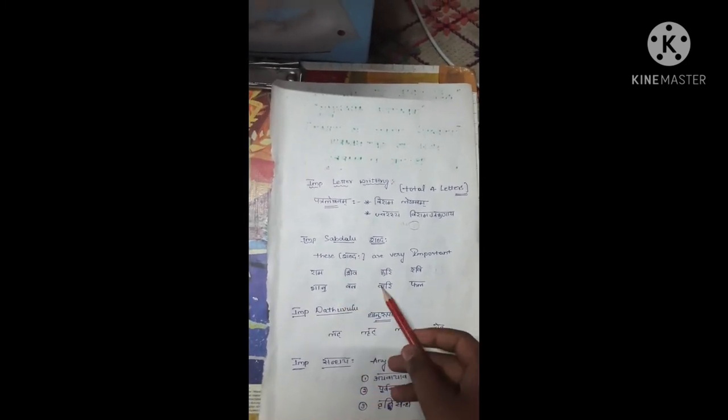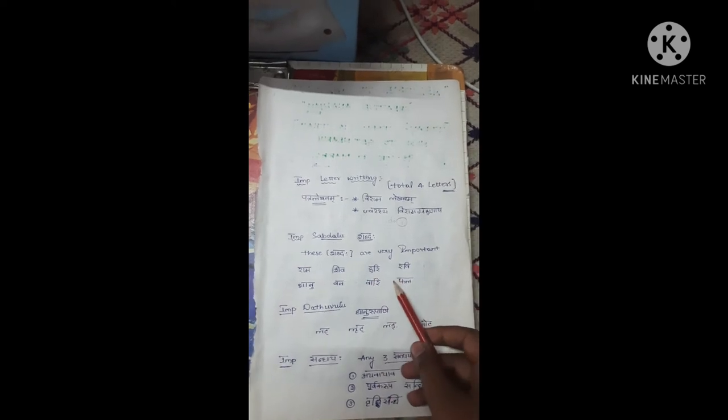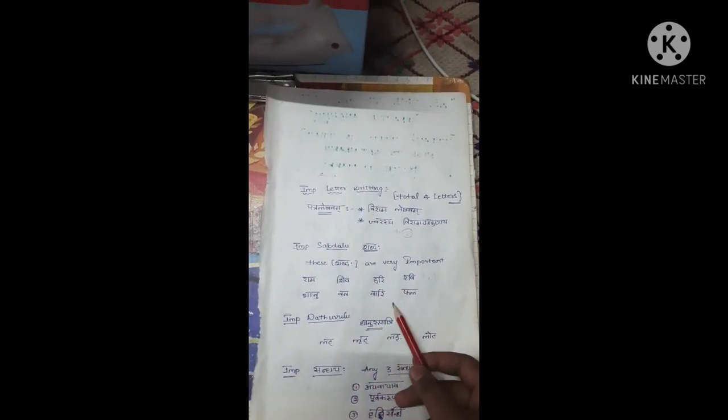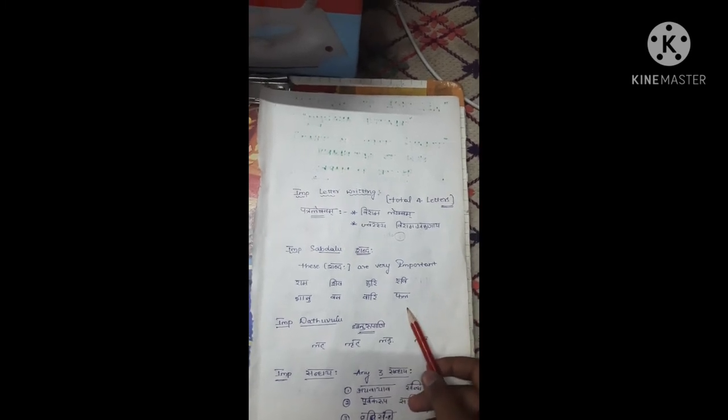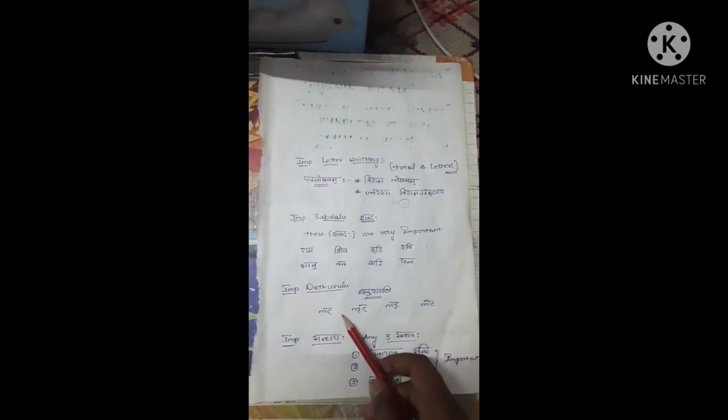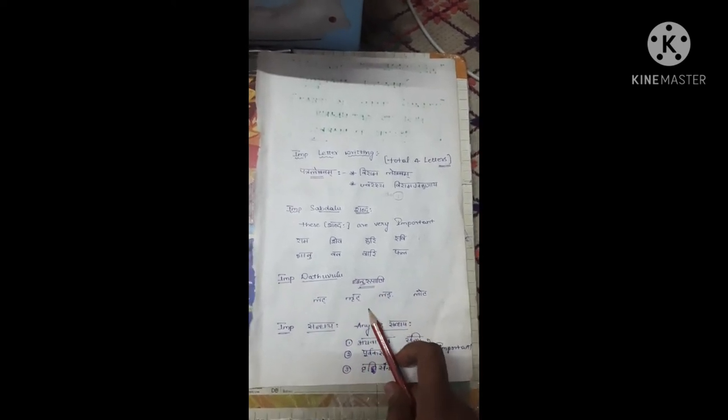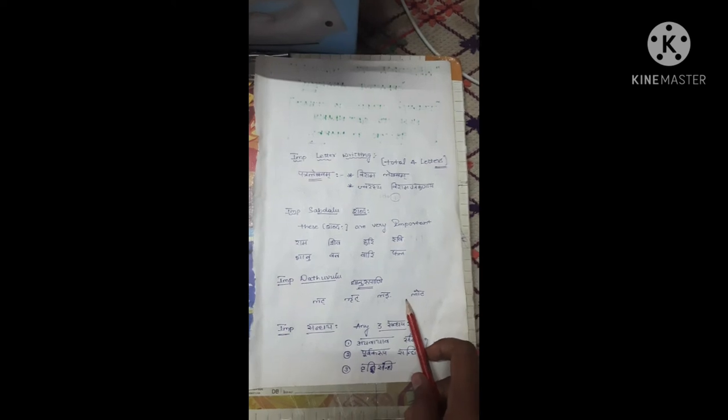Rama shabdha, Shiva shabdha, Hari shabdha, Ravi shabdha, Bano shabdha, Vana shabdha, Vari shabdha, and Phala shabdha. These are important words. There are four important word forms (roopas) to memorize.